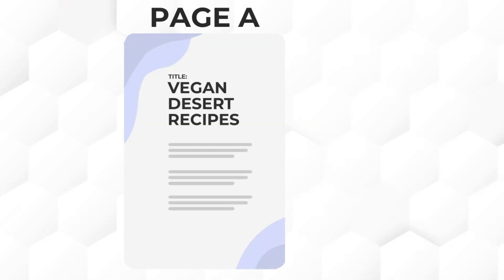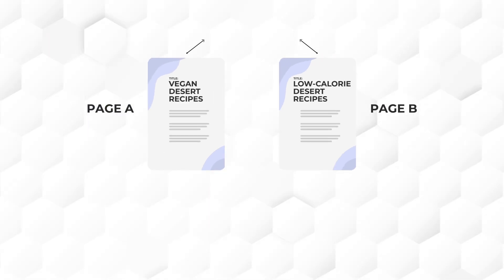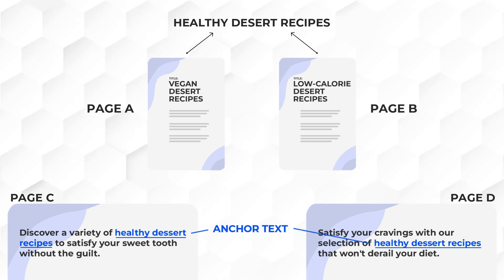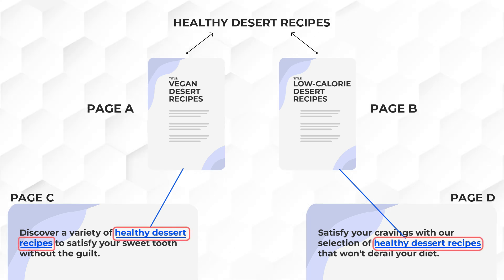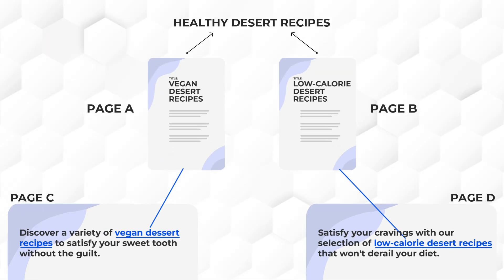The third solution works when two pages with distinct content and angles happen to rank for the same keyword. For example, page A focuses on vegan dessert recipes and page B focuses on low-calorie dessert recipes, but both started ranking for 'healthy dessert recipes.' Since both contents are different, leverage the anchor tags of other pages on your site that internally link to these pages. Change the anchor tags of page C to 'vegan dessert recipes' and page D to 'low-calorie dessert recipes,' and optimize all internal link anchor tags pointing to those two cannibalized pages accordingly.